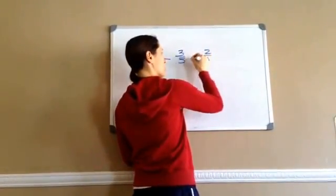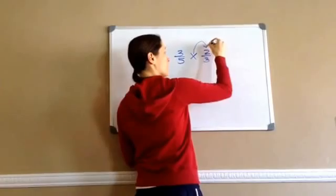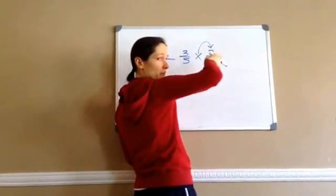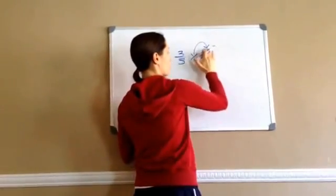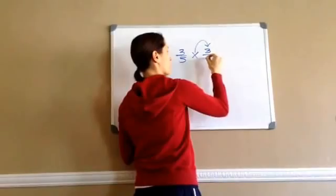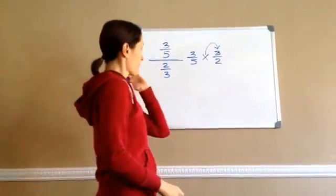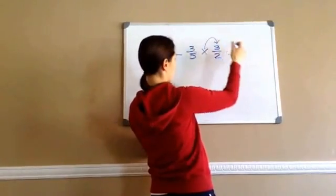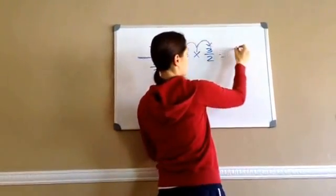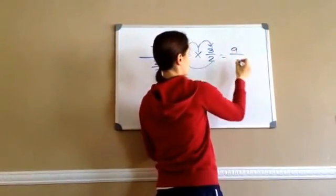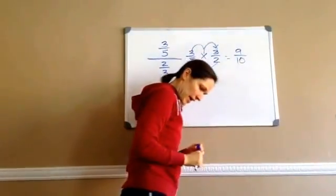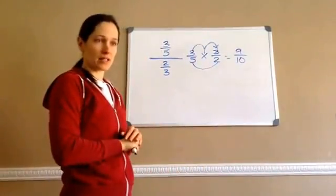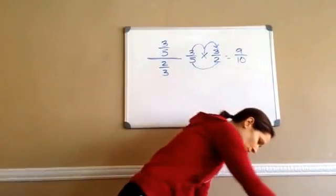So hopefully you remember the rules. We're going to change this division to multiplication, and when you do that, the fraction to the right flips or goes through its reciprocal. So 2 thirds will become 3 halves, right? And then we would just work it, and there's nothing to cancel out or reduce. So we're going to go 3 times 3 is 9, and 5 times 2 is 10, and that is the final answer, 9 tenths. See how we did that? Pretty simple once you break it down.